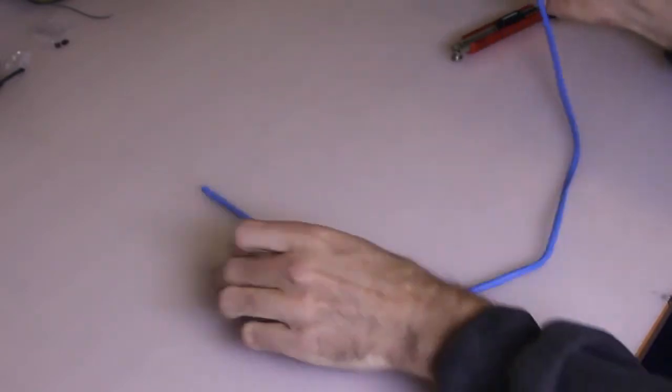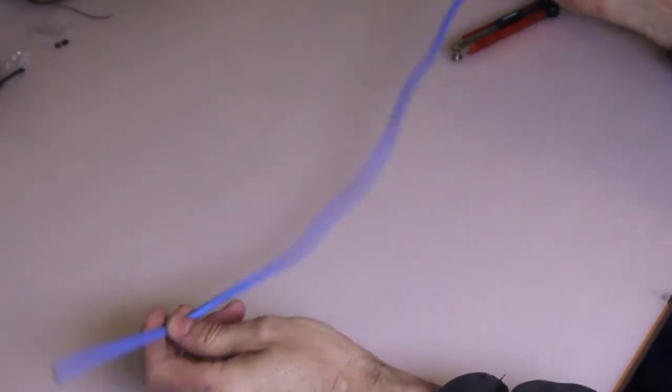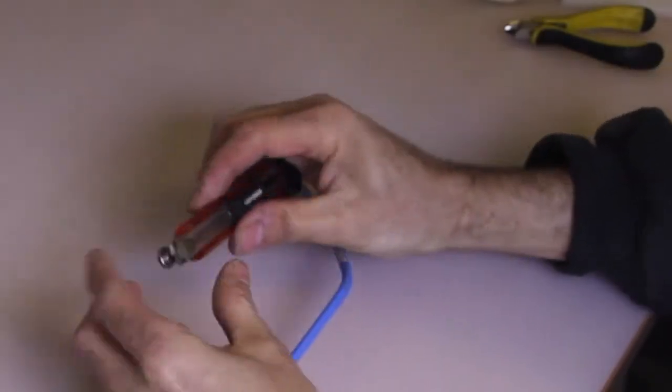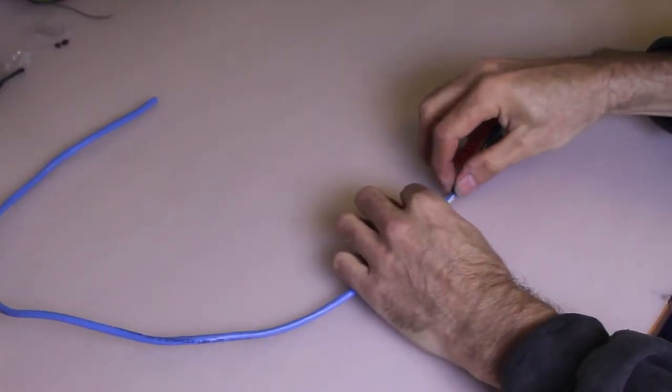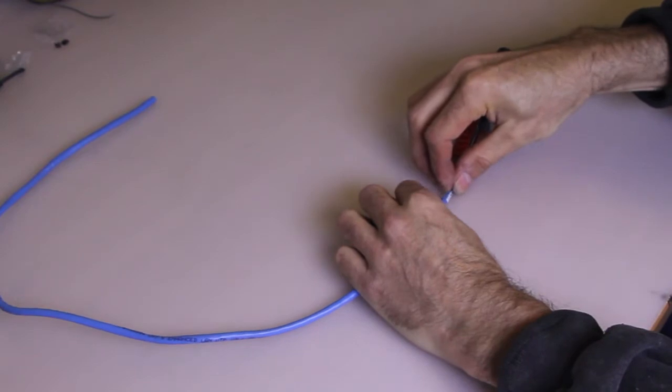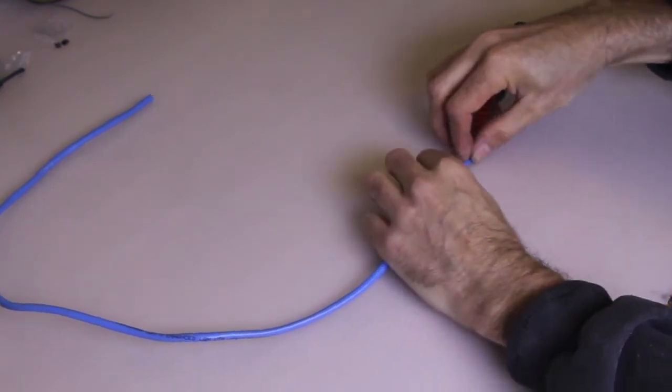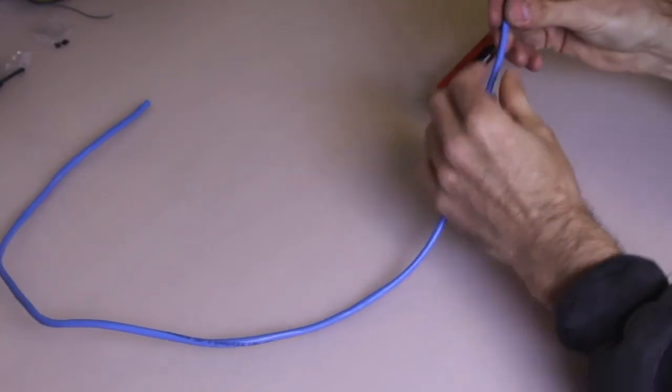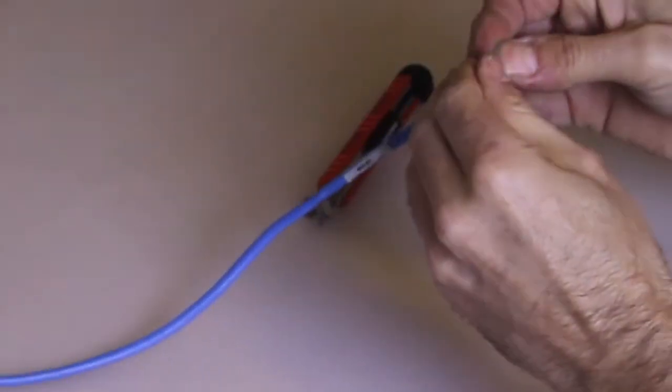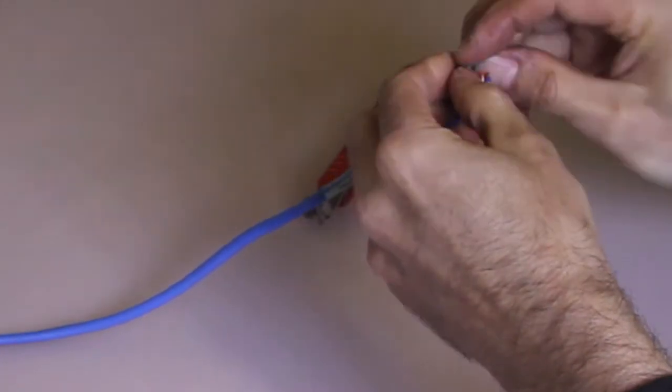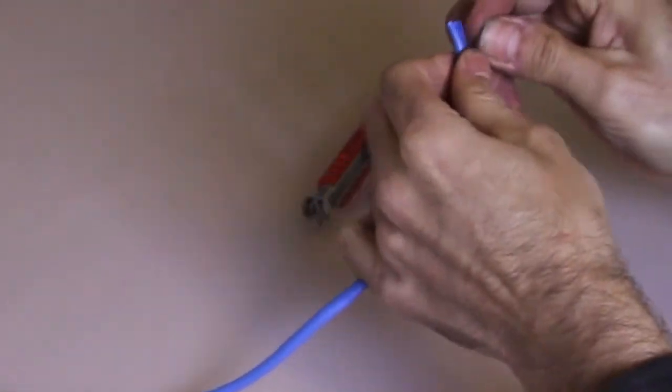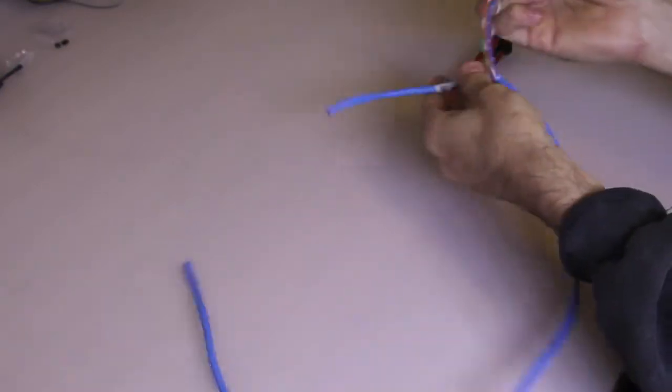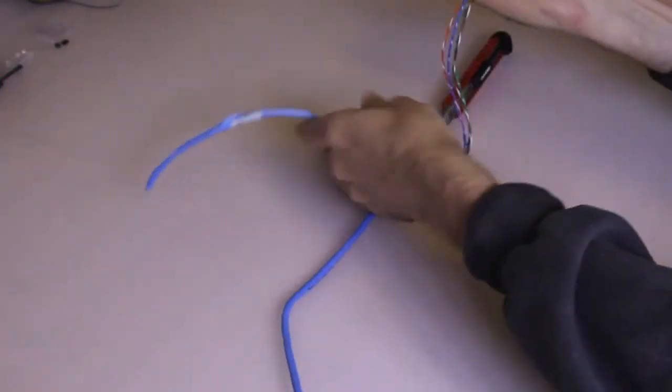So we've grabbed our ethernet cable, probably about 800 millimeters that we just measured on the printer. We're going to strip the sheath off. I'm just going to start at one end and just cut the sheath, not too deep—you don't want to damage the conductors underneath. Just slice along, and you should be able to strip it back and just yank it out.